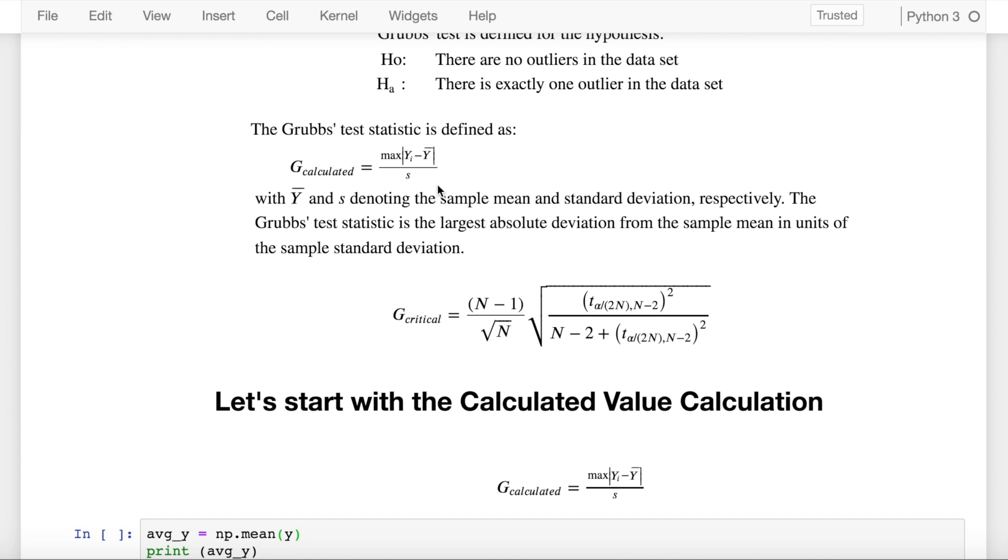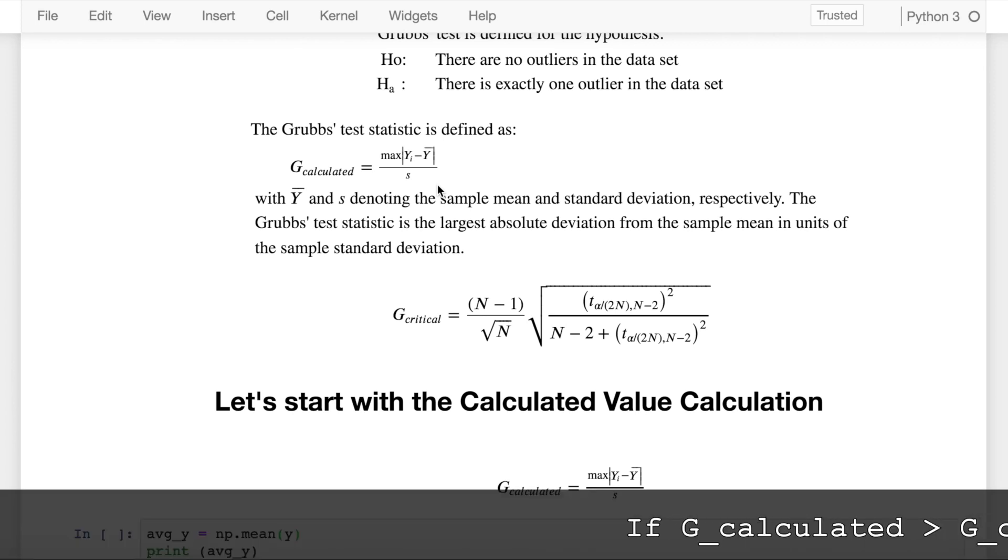Now for any hypothesis test, you have a calculated value, you have a critical value. If your calculated value is greater than the critical value, you reject the null hypothesis and you accept the alternate hypothesis, which in our case states that there is exactly one outlier in the dataset. If your calculated value is less than the critical value, then you accept the null hypothesis stating that there is no outlier in your dataset.